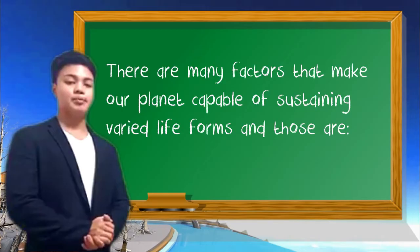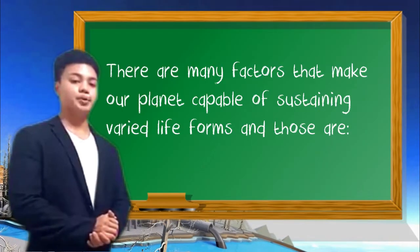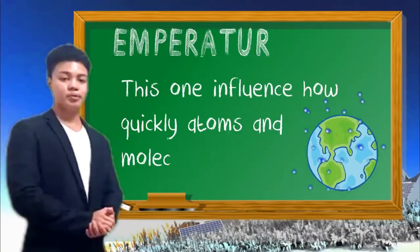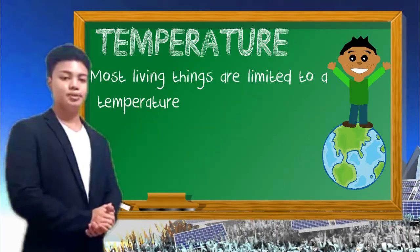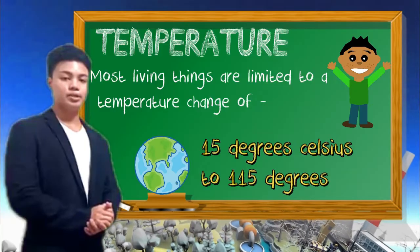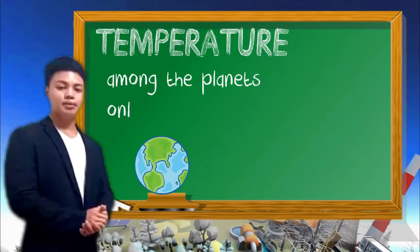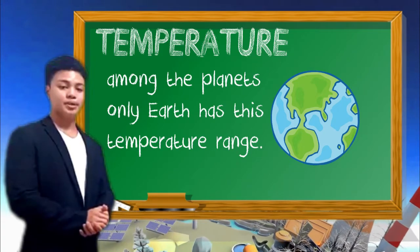There are many factors that make our planet capable of sustaining life, and those are temperature. This one influences how quickly atoms and molecules move. Most living things are limited to a temperature range of 15 degrees Celsius to 115 degrees. Among the planets, only Earth has this temperature range.